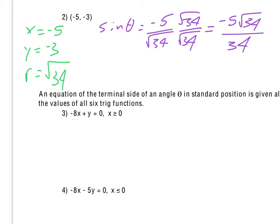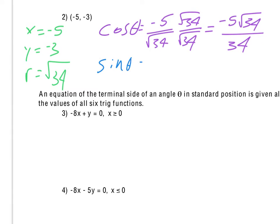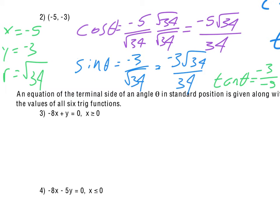We would reduce the square root of 34 if we could, but it doesn't reduce, so we leave it as is. I made a mistake — cosine is X over R, so that was actually my cosine value. Sine, being Y over R, gives us negative 3 over the square root of 34. After rationalizing, we get negative 3 square roots of 34 over 34. The tangent works out well — tangent of theta is negative 3 over negative 5. The negatives cancel, so we get a positive 3 fifths.